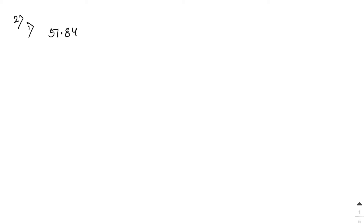Sum number 2: find the square root of decimal numbers by division method. For 51.84, write it down. For digits before the decimal point, make pairs from right to left. For digits after the decimal point, make pairs from left to right.